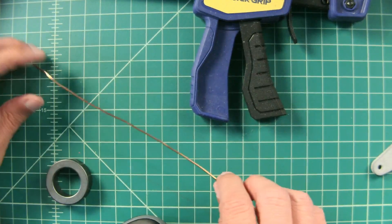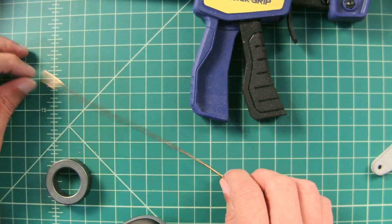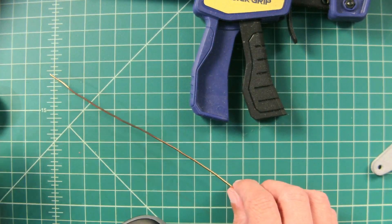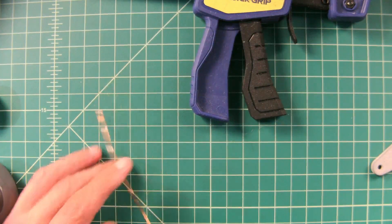I've straightened out the three feet of included magnet wire, and I want to take about six inches of this magnet wire and fold it back. Let me measure that out.